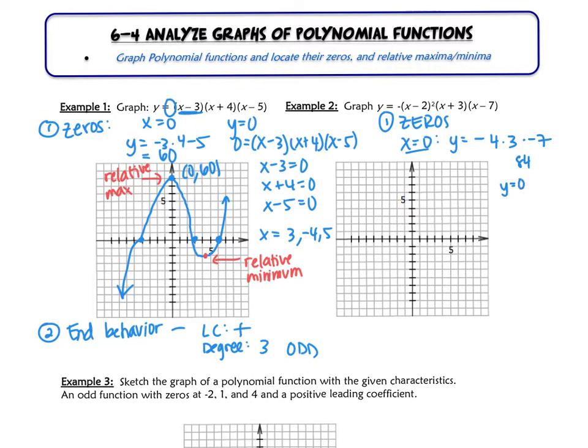If we now do y equals zero, we're going to set each of those factors equal to zero, like we did in the previous problem. In this case, we get 2, negative 3, and 7. Before looking at end behavior, let's graph those zeros. We have (2, 0), (-3, 0), and (7, 0).